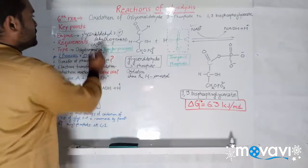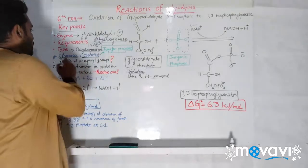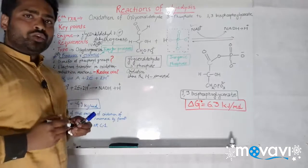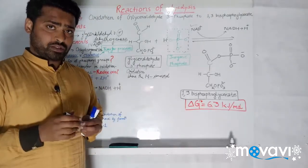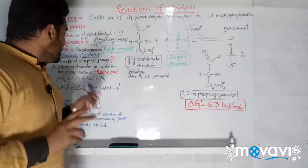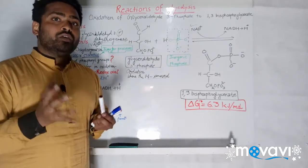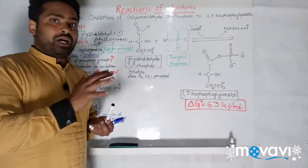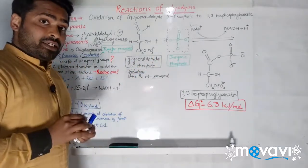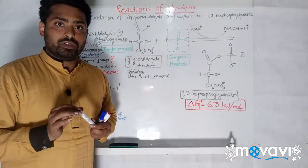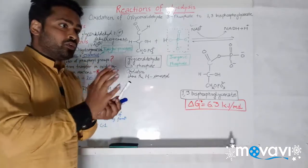Before we go ahead, there is something important to know: there are two processes in living organisms which are very important, and these processes are known as transfer processes. The first one is the transfer of phosphoryl groups, which we have already seen in the previous five reactions. The inorganic phosphate would be involved here. The second one is the transfer of electrons.